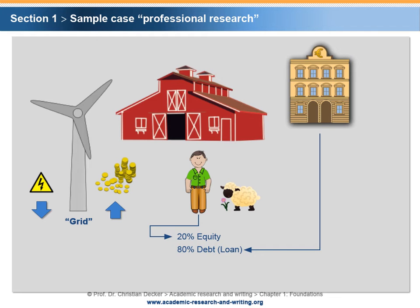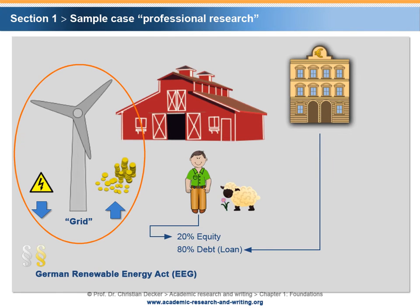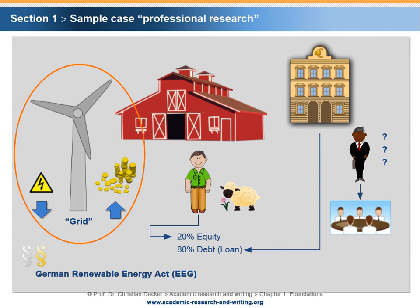The farmer claims that electricity sales are guaranteed by the German Renewable Energy Act – in short, EEG. The bank has no experience concerning windmill project financings. Therefore, the Executive Committee of the bank asks the Credit Department to provide a memorandum that analyses the interdependencies between the EEG and project financing of windmill projects in general.